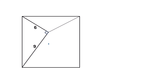Hello everyone. In this video I am going to solve an interesting geometry problem. We have a square and inside it there is a right angle triangle whose base is 9 units and height is 6 units, and this angle is 90 degrees. We have to find the distance between this vertex and this corner of the square.